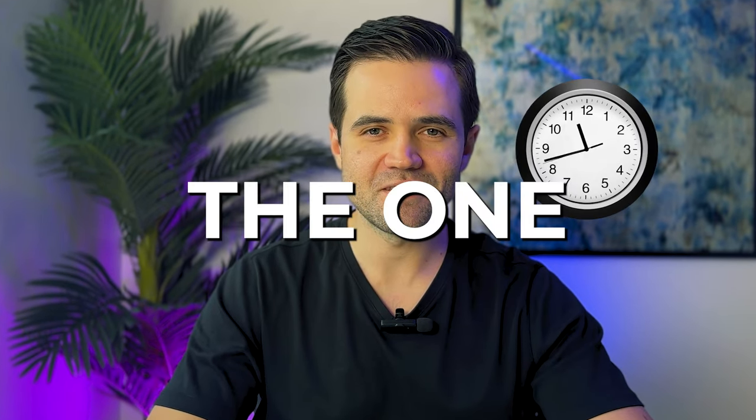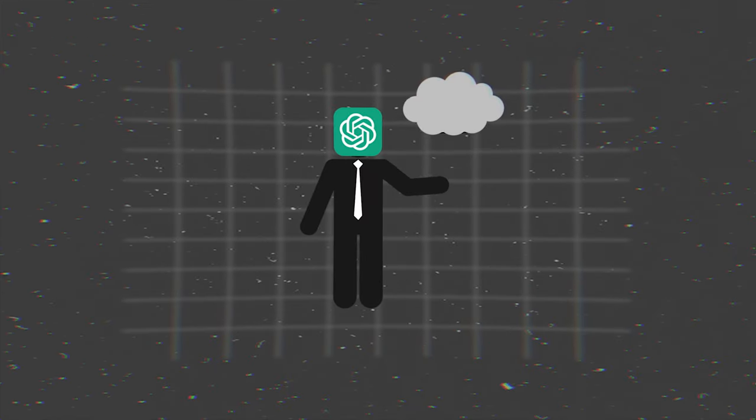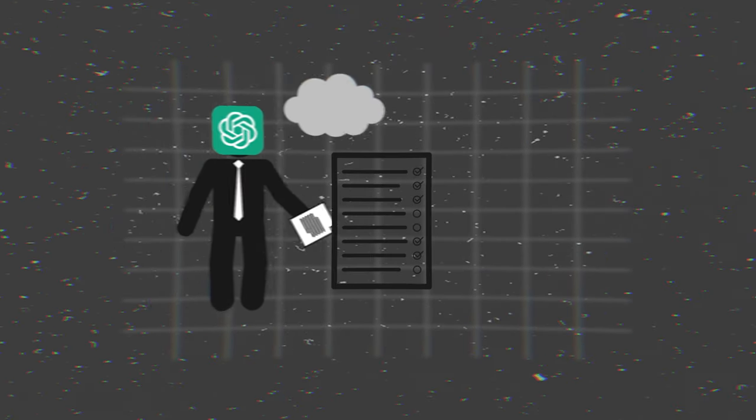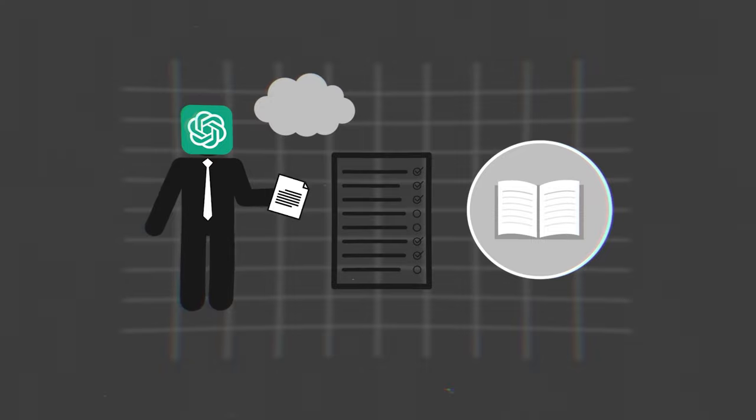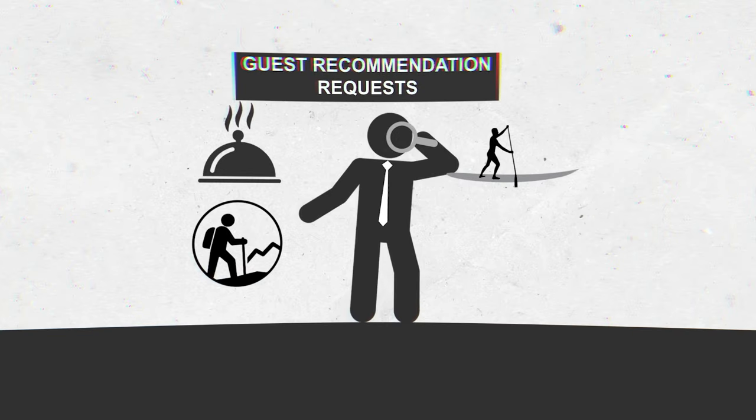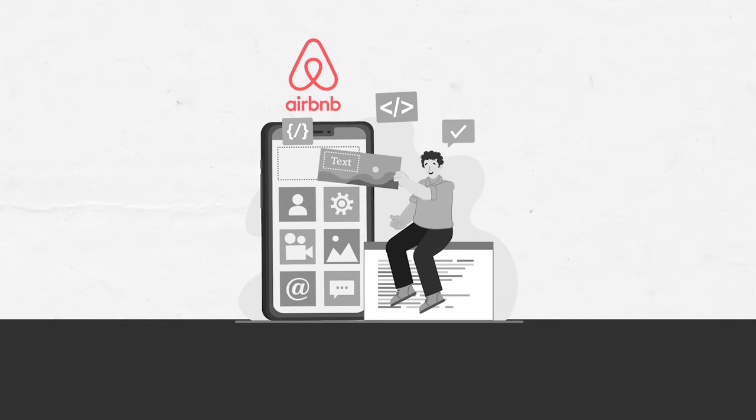And now our third and final tip — we made it, folks — the one that saves me the most time. Not only can ChatGPT help you with email marketing, checklists for cleaners, and house manuals for guests, but it can also help you with guest recommendation requests. Don't get me wrong, I love providing recommendations to our guests — it's just that sometimes I have no clue what to suggest based on very specific interests. That's where ChatGPT can come in and whip up a personalized list of attractions based on the property's location and even within a desirable distance for the guest.